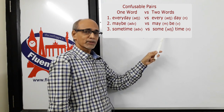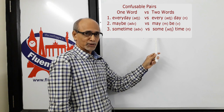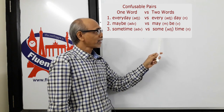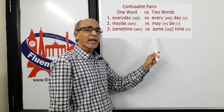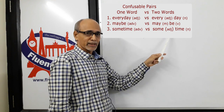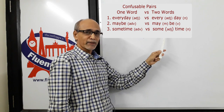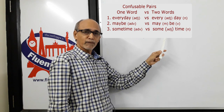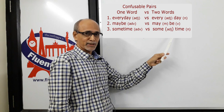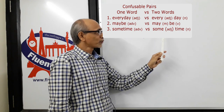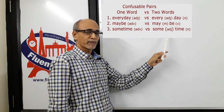When you write 'may be' as two words, 'may' is a modal auxiliary — a modal verb — and 'be' is the main verb. For example, 'he may be late.' In place of 'be' you can use other verbs as well, such as 'he may come late.' So here 'may' is a modal verb and 'be' is the main verb.